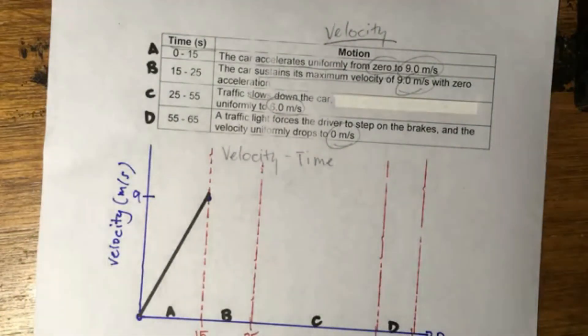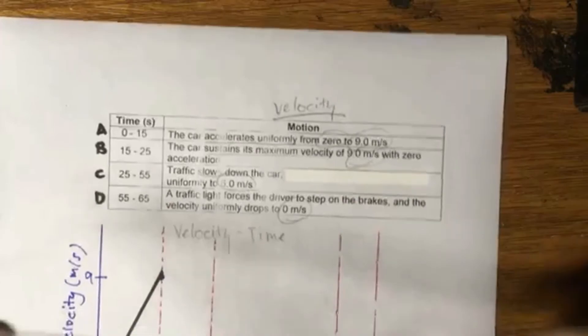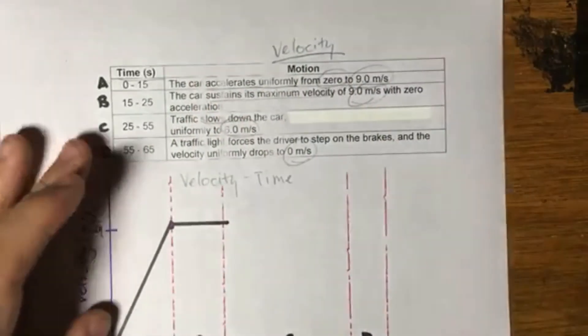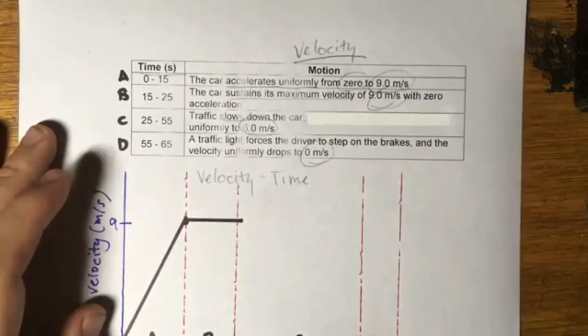There's no slope. So you're just going to sustain the 9 meters per second. You're going at a constant rate. So for 10 seconds, it goes a bit like that. And next.